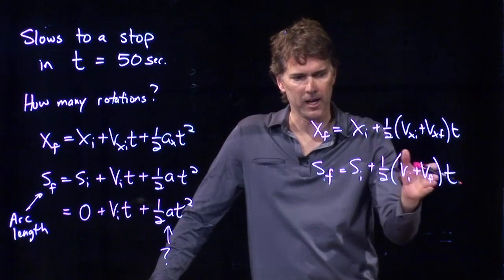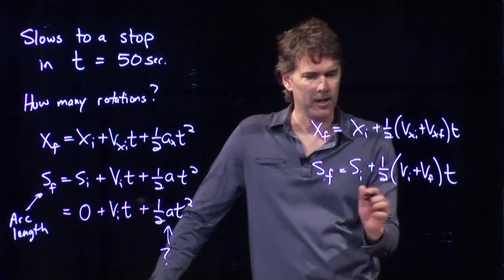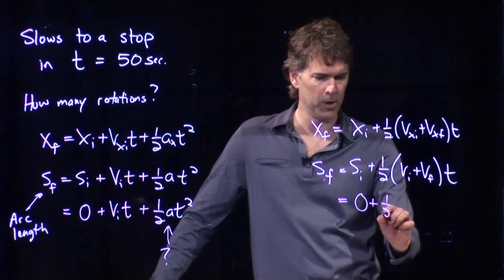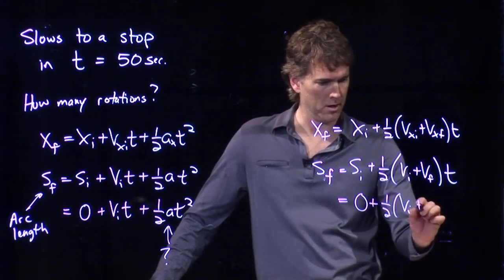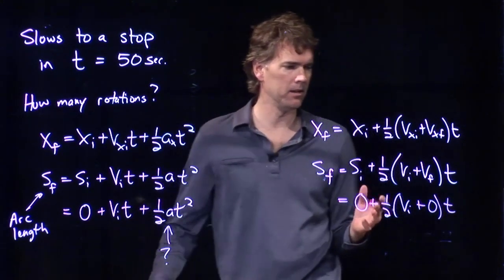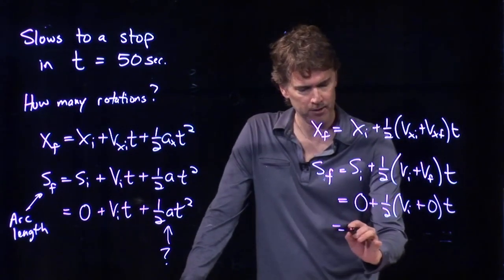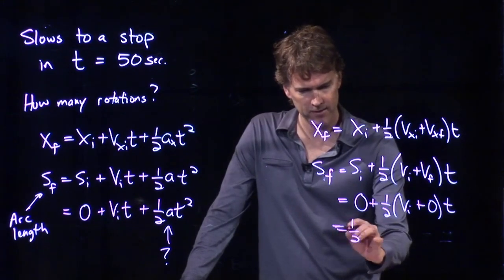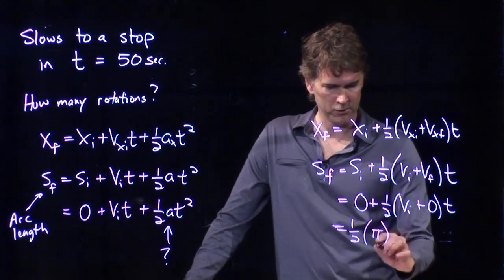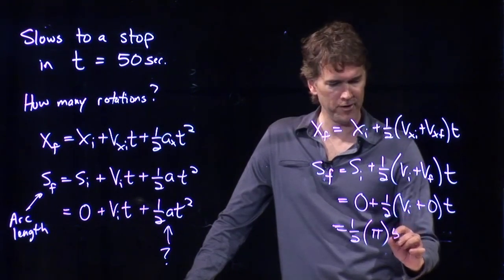And we know all these things now. We start at zero. We have a v_i, which we just solved for. We end at zero. The final speed is zero because we come to rest. And so, now we can calculate s_f. All right, we have one-half times v_i, which we just found was, strangely, pi, meters per second. And T, we said, was 50 seconds.